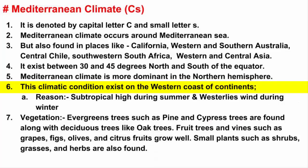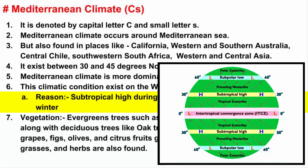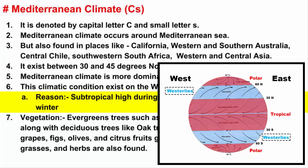Now let's see why Mediterranean climate exists on the western coast of the continents. During summer, this happens because of the subtropical high, which is basically a high pressure belt that exists in the subtropical region. And during winter, it's because of westerly winds.